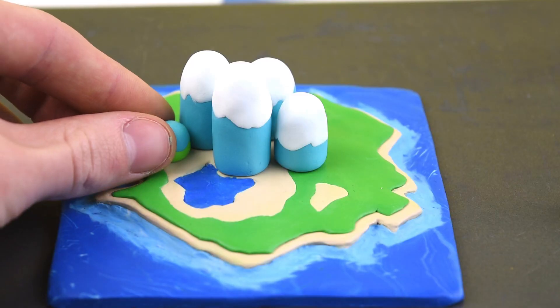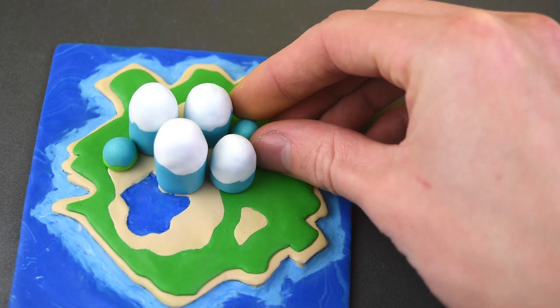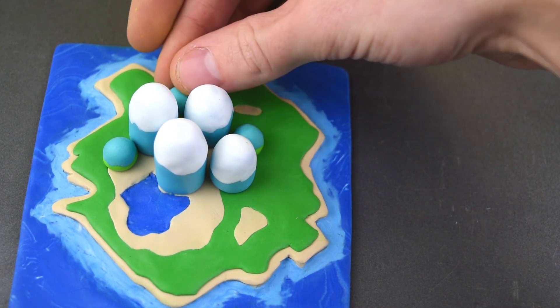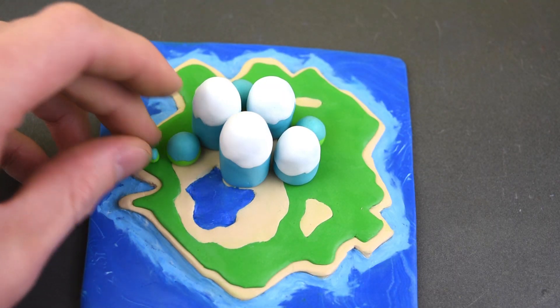Now we also have some of these smaller ones, some of these green mountains, and we have even smaller versions of those going around them.